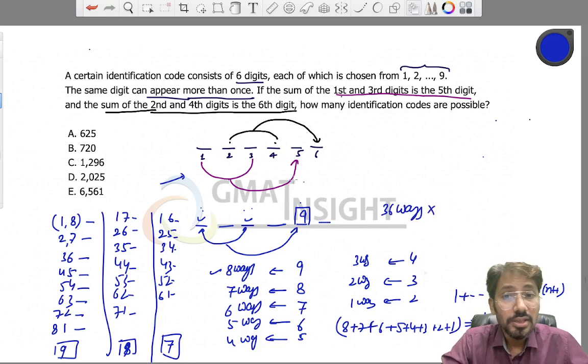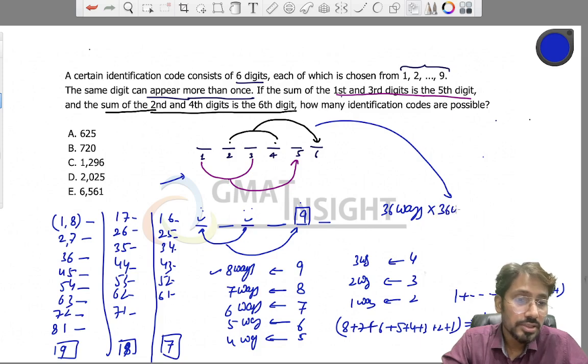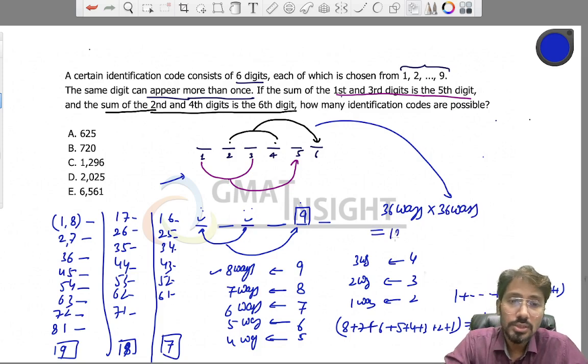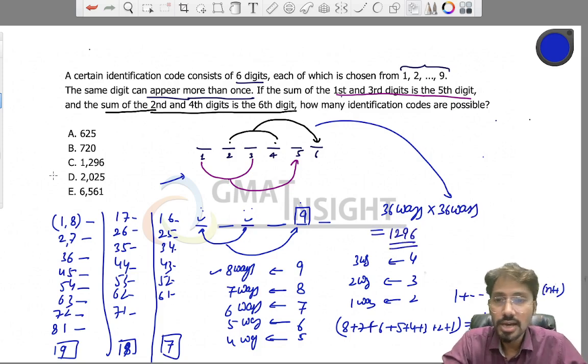The places number two, four, and six can also be filled in 36 ways. Therefore, the total possible outcomes will be the square of 36, which is 1,296. Hence the answer to the question becomes option C.